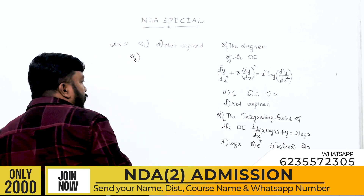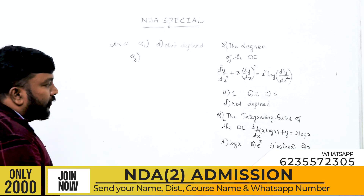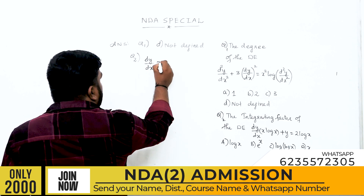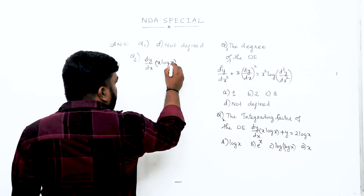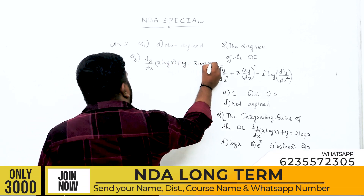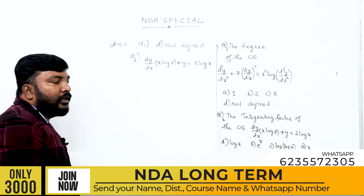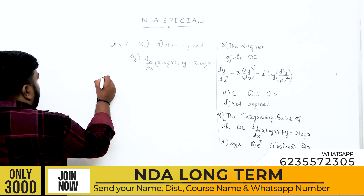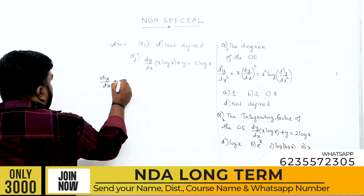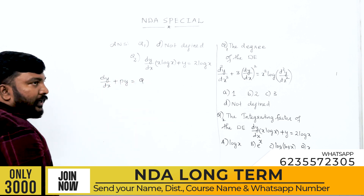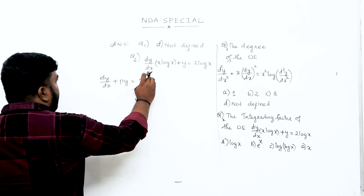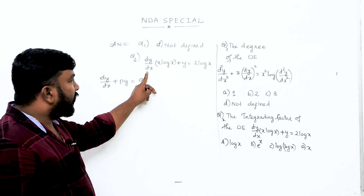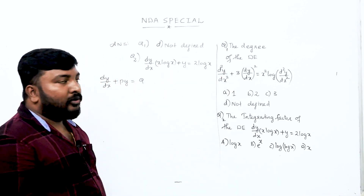The second question: the integrating factor of the differential equation dy/dx into x·log(x) plus y is equal to 2·log(x). The standard linear differential equation form is dy/dx plus P·y is equal to Q.